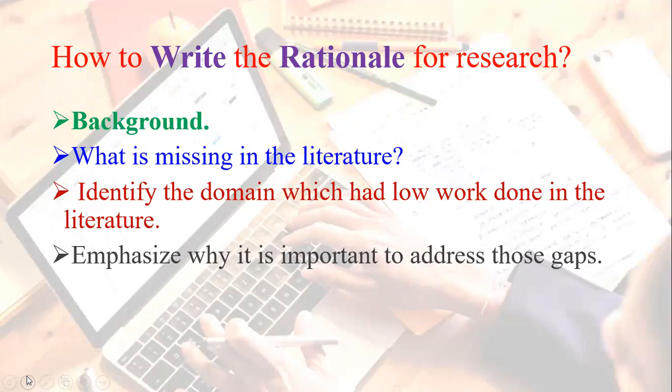First, you know the background. In the last video, I told you that the statement of the problem — the paragraph above it is about the rationale of your research. So in the rationale paragraph, write the first line of background. What is the background of your literature? Which things are included in the literature and have work? Just write one line with a reference, whichever referencing style you are following — either APA, Oxford, or whatever you are adopting.